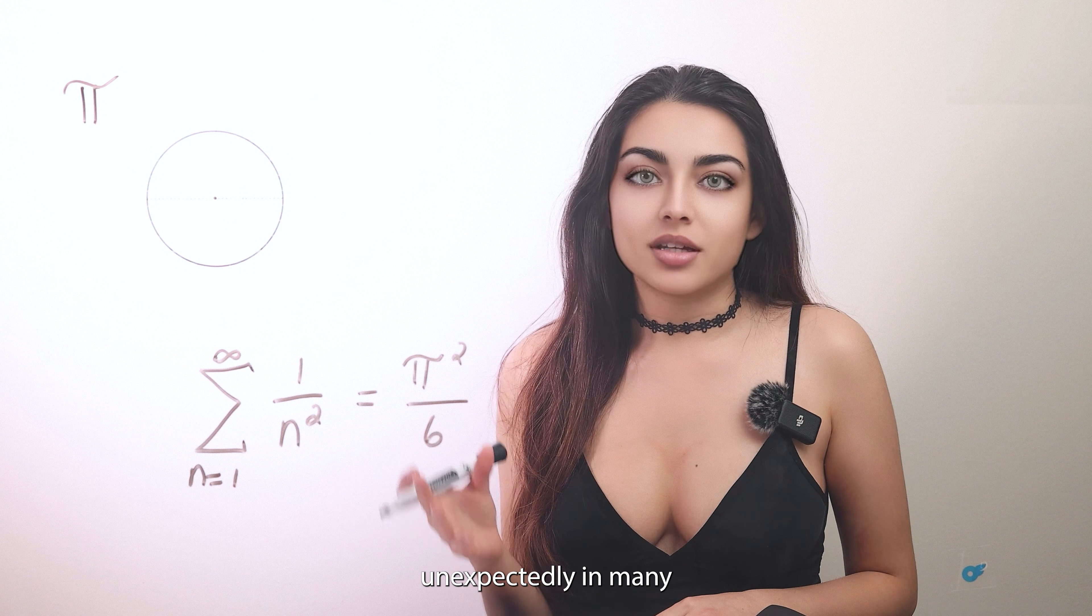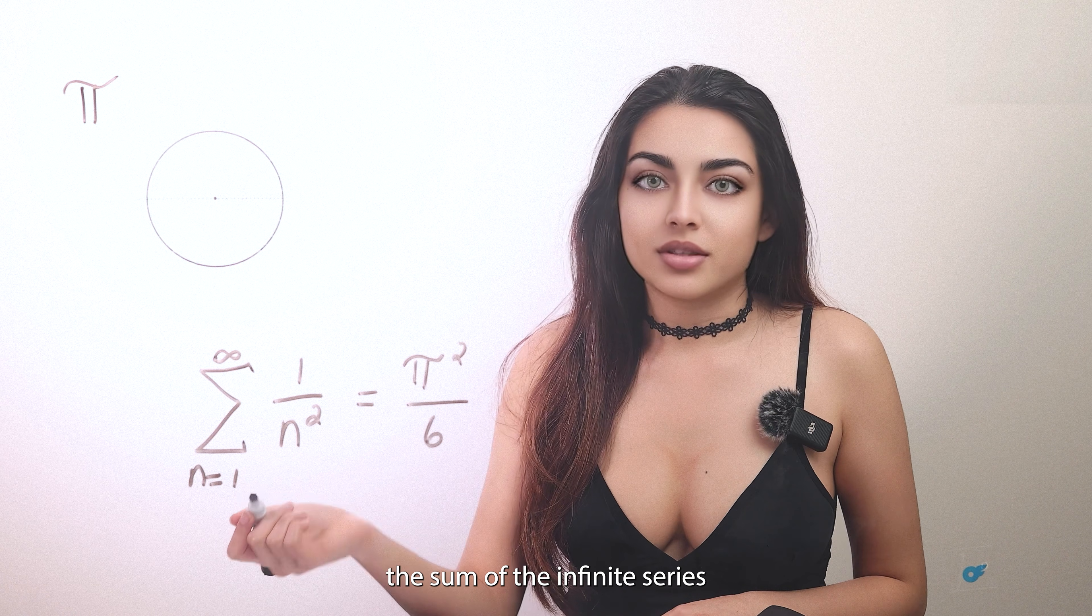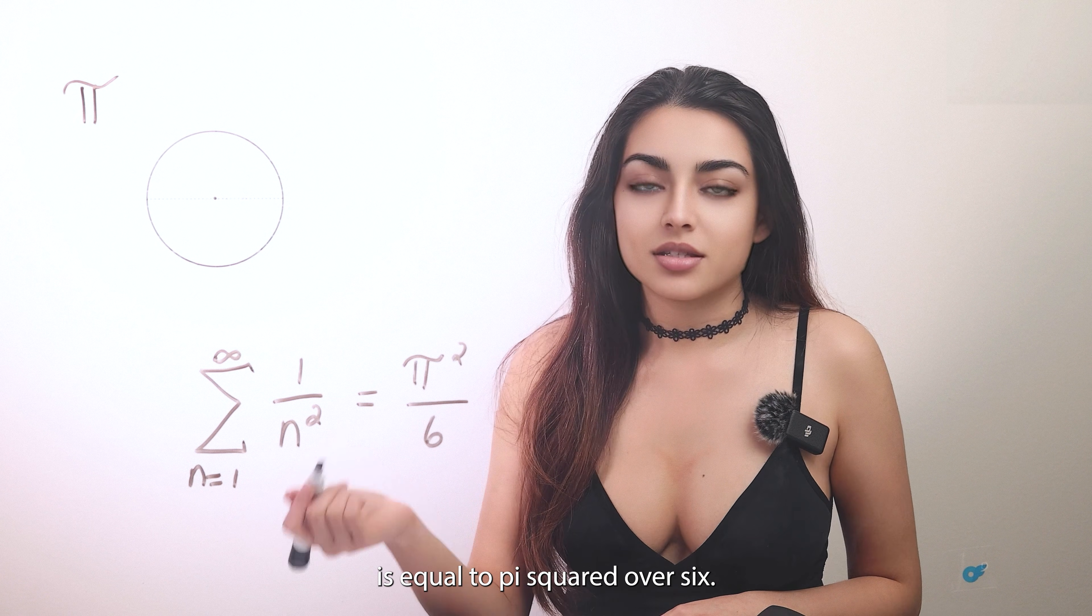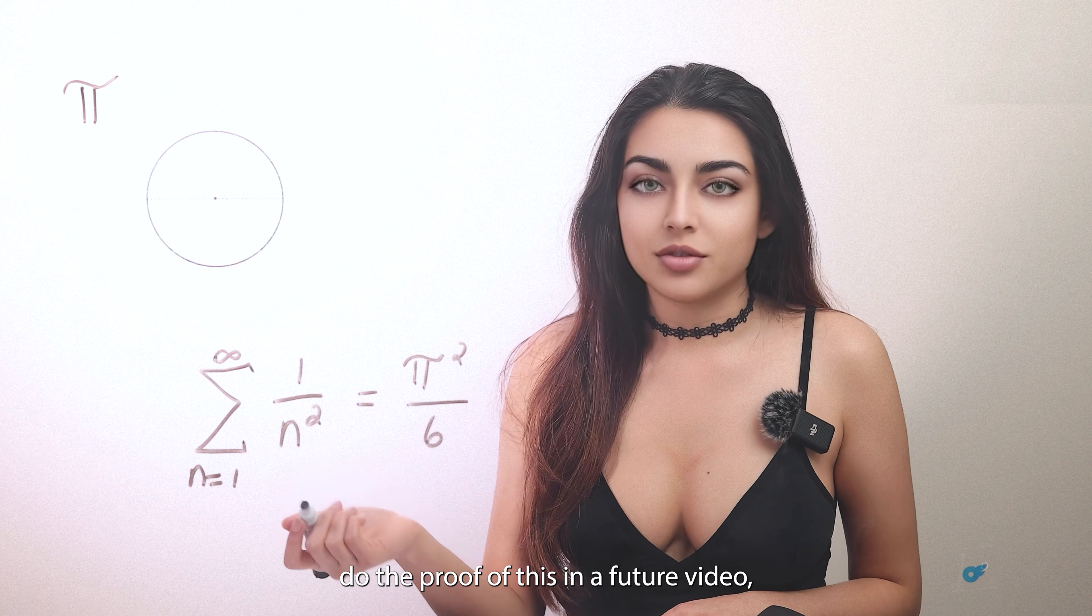Additionally, pi shows up often unexpectedly in many mathematical situations. For example, the sum of the infinite series is equal to pi squared over 6. If you'd like to see me do the proof of this in a future video, please let me know in the comments.